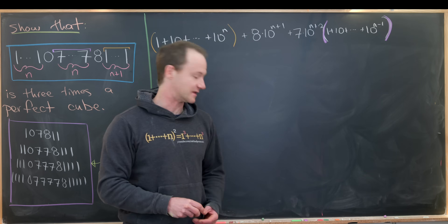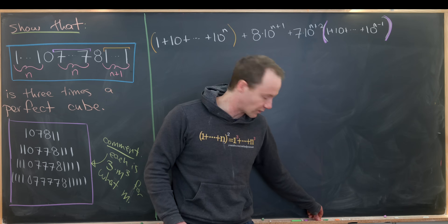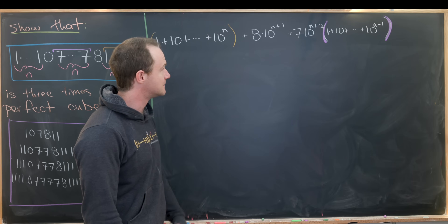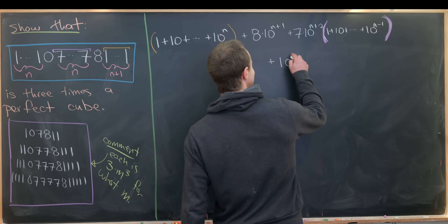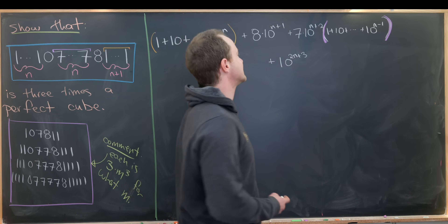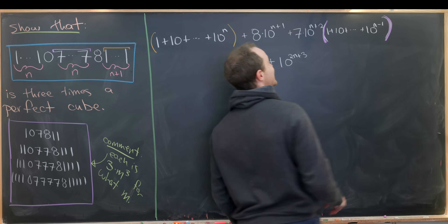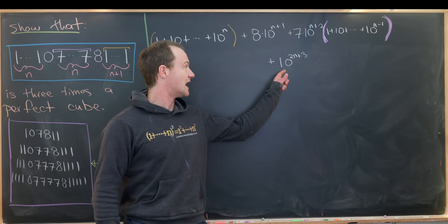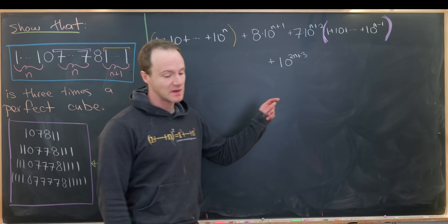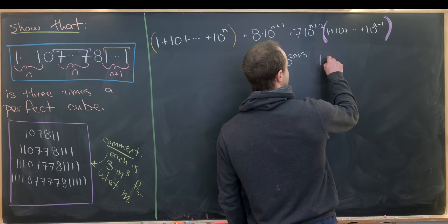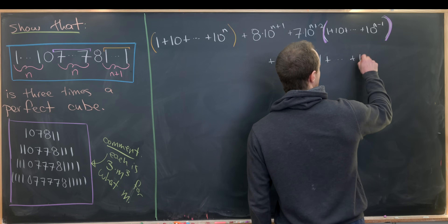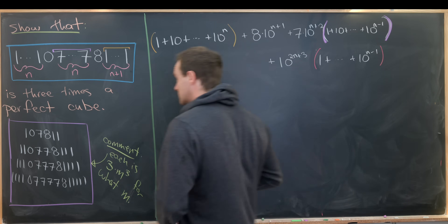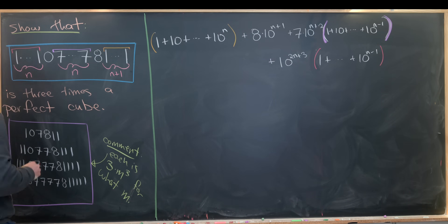You can multiply the seven times ten to the n plus two through to see the exact digits, but it's fine to factor it out like this. The one remaining set of digits is the n ones at the extreme left-hand side. Those start at ten to the two n plus three — we can factor that out and be left with one plus ten plus ten squared, all the way up to ten to the n minus one, since we have n copies of one. I'll put that in red parentheses.